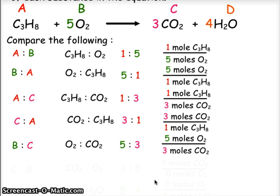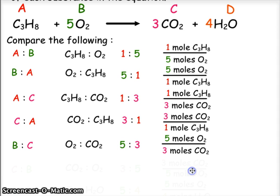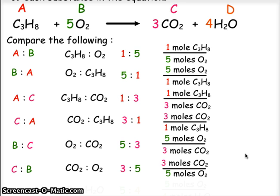Comparing B to C — oxygen to CO2 — gives a five-to-three ratio, with a conversion factor of five moles of oxygen to three moles of carbon dioxide. And comparing C to B — carbon dioxide to oxygen — gives a three-to-five ratio, with a conversion factor of three moles of carbon dioxide to five moles of oxygen.